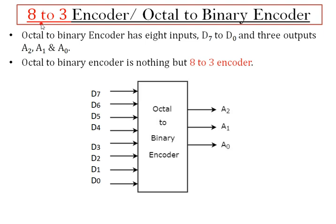Next I am going to the 8-to-3 encoder. '8' means octal — this is an octal-to-binary conversion encoder. If n equals 3, then we have 2-power-3 = 8 inputs and 3 outputs. This is the block diagram of the 8-to-3 encoder circuit.